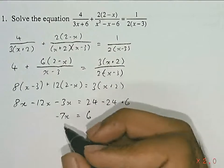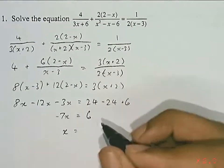Now you just divide everything by negative 7. You're left with x is equal to negative 6 over 7.